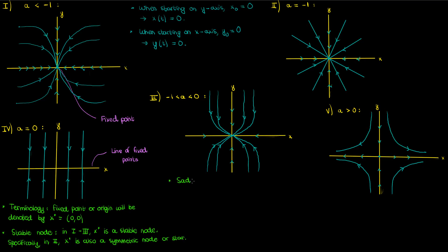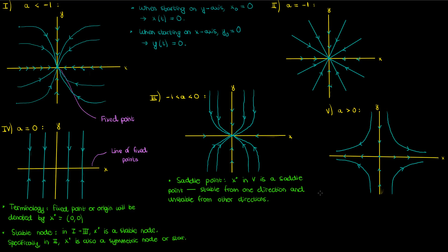The next term is a saddle point, which applies to x-star in scenario 5. A saddle point is a point that's stable from one direction but unstable from other directions. Why is it called a saddle point? Think of a saddle: if I let go of a ball on the major curve connecting the two tips of the saddle, it will slowly converge towards the center. So this is one stable trajectory of the saddle. But if I drop the ball anywhere else it's just going to fall off, so trajectories will be unstable everywhere else. So x-star in scenario 5 is a saddle — stable in one direction but unstable in all the other directions.